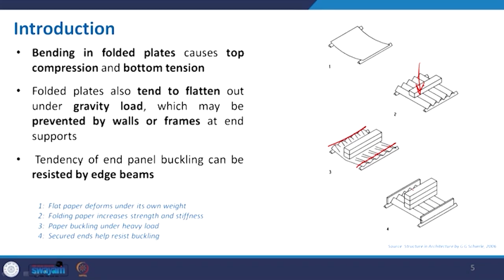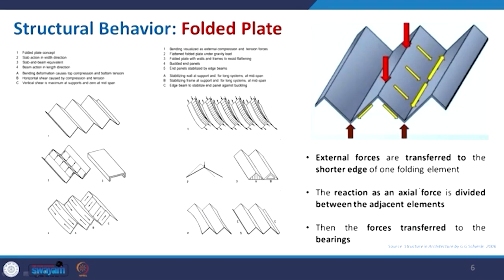Folded plates cause top compression and bottom in tension, similar to a truss, and it will tend to flatten out due to gravity load. You can solve this by giving support from the edge which stops the flattening. The structural behavior is: external forces are transferred to the shorter edge first, then the reaction is divided between the adjacent elements. The load vector is distributed, and finally the force is transferred to the supporting columns.